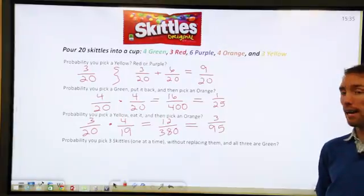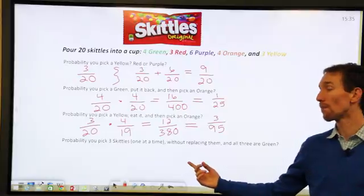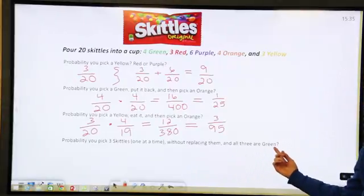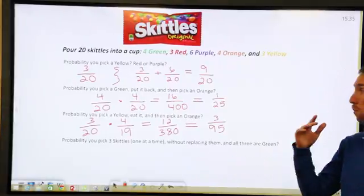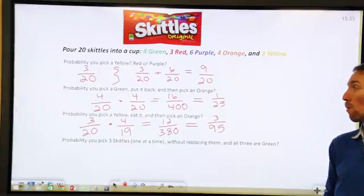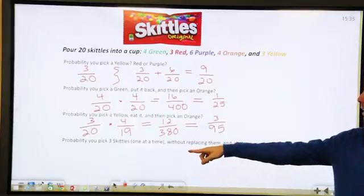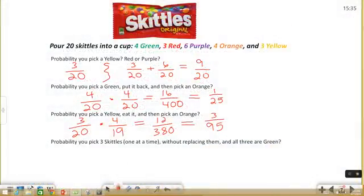Let's take a look at our last example. This one you're finding the probability that if you pick 3 Skittles one at a time, you're not going to replace them, but you want them all to be green. So we're going to do one thing and then another and then another. So we're going to multiply three probabilities together. Well, our first pick is going to be a green Skittle. There's 4 greens and there are 20 total Skittles in our cup.